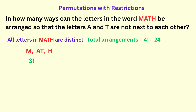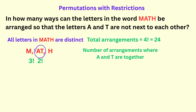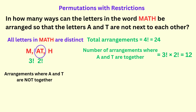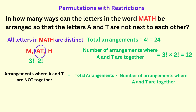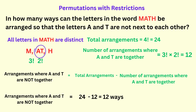Remember that the block with A and T can be arranged within the block any of two ways — A then T, or T then A. So the total number of arrangements where A and T are together is three factorial times two factorial, which is twelve. Therefore, to get the total number of arrangements where A and T are not together, we subtract: twenty-four minus twelve equals twelve arrangements where A and T are not beside each other.